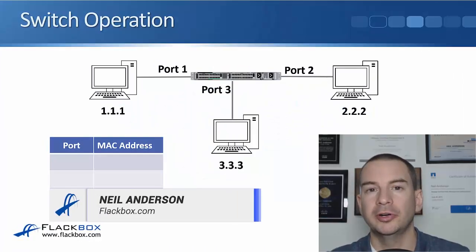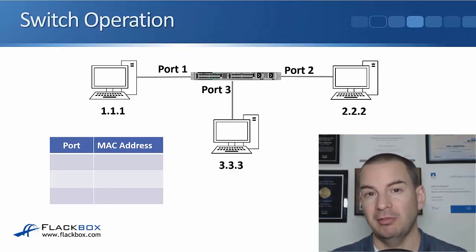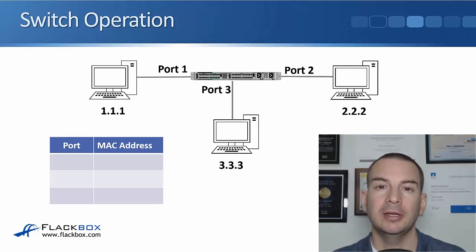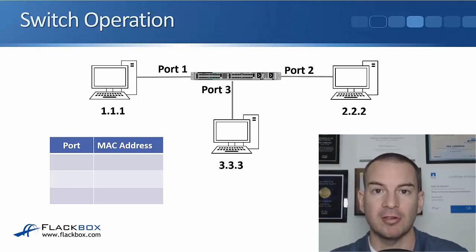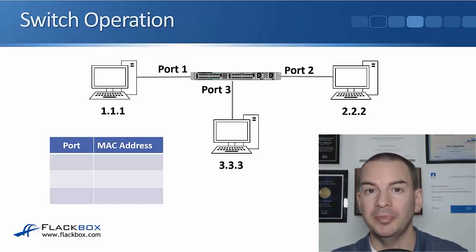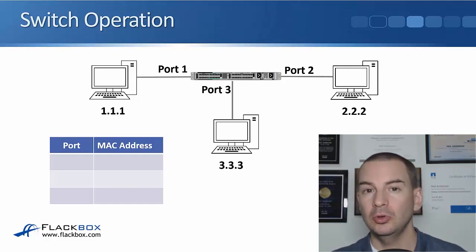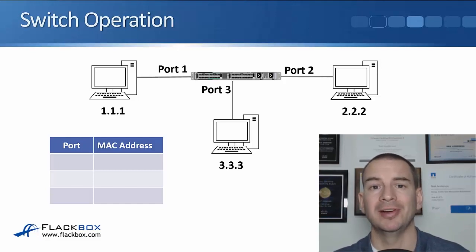In the last lecture you learned that switches, which function at layer 2 of the OSI stack, learn MAC addresses and use that information to populate the MAC address table, which is a mapping of the MAC address to the port that it is reachable on. In this lecture we're going to take a look at how that works in a bit more detail with an example. We've got one switch, a host with MAC address 1.1.1 plugged into port 1, 2.2.2 plugged into port 2, and 3.3.3 plugged into port 3. We've just powered everything on so there's nothing in the MAC address table yet.